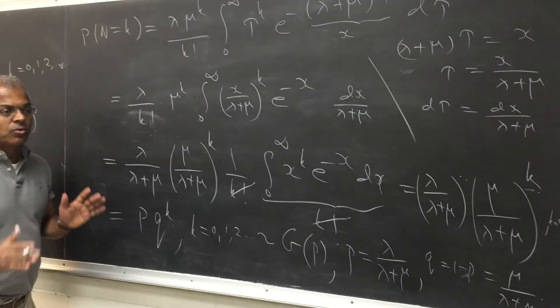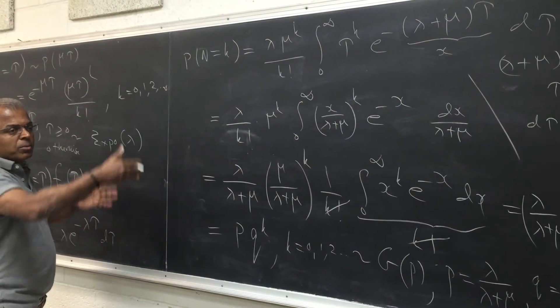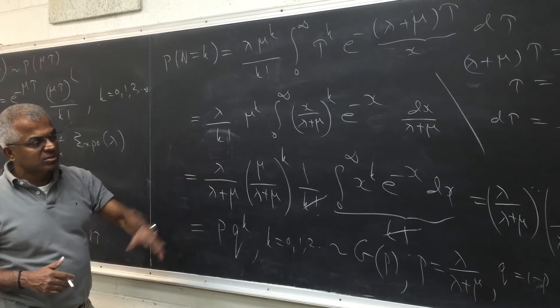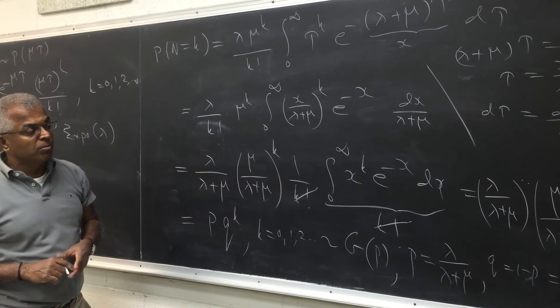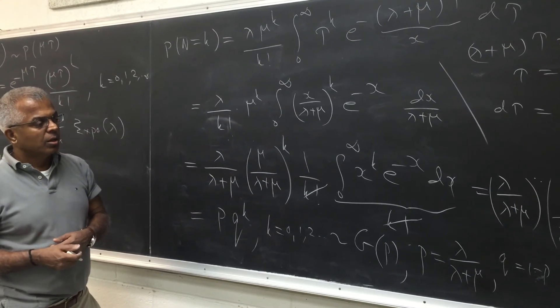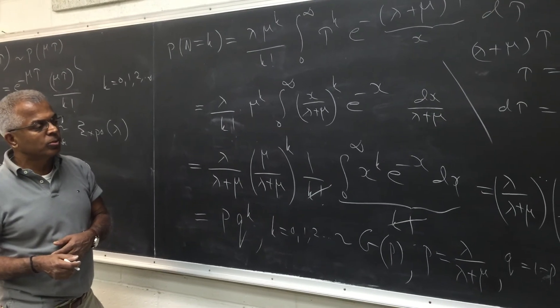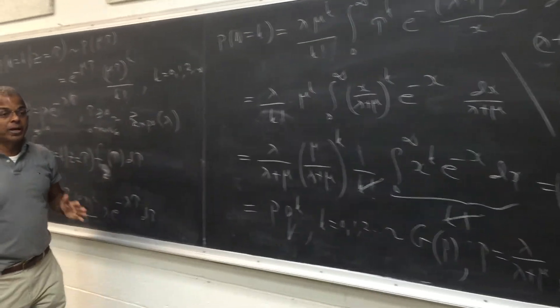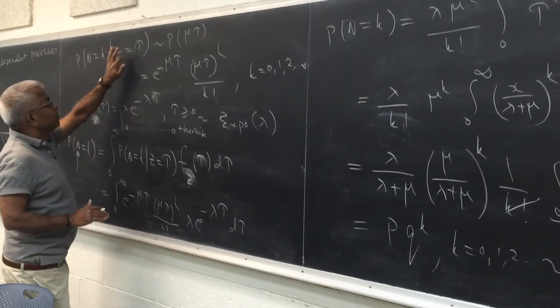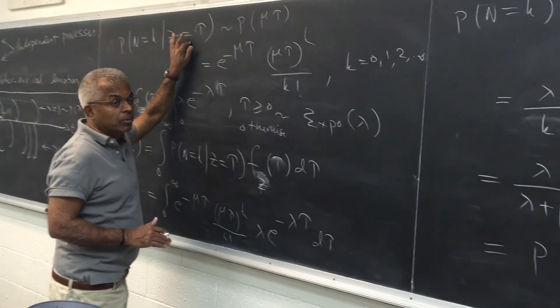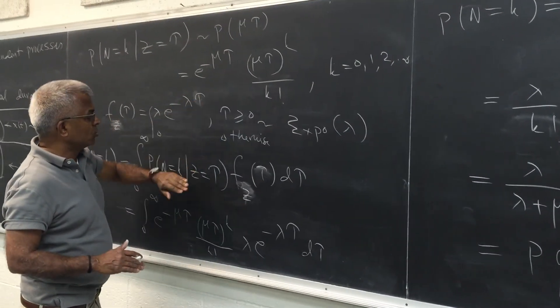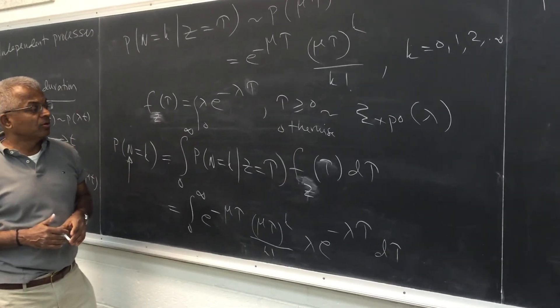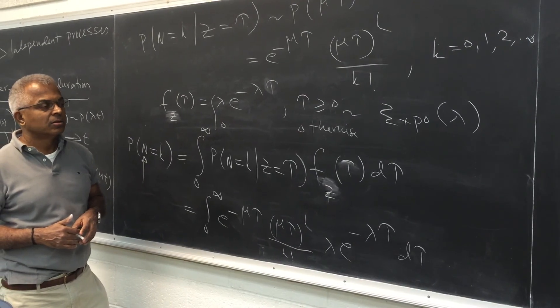So the bottom line is the following. If you look at the number of departures between any two random arrivals of another Poisson process, those departures have a geometric distribution with p which is mingled with both lambda and mu. In other words, p is lambda over lambda plus mu, and q which is 1 minus p is mu over lambda plus mu. So it's a very interesting application of trying to solve a complex problem by breaking it up. So the original problem is too complex, so we look at conditioning on the second random variable. When this becomes, we can handle it. Then you use the Bayes theorem and remove the condition to get the unconditional density function or the probability mass function of this discrete random variable. Thank you.